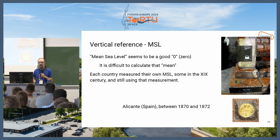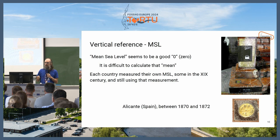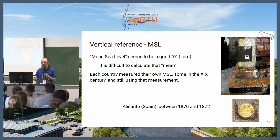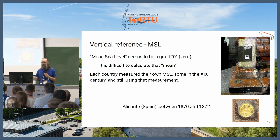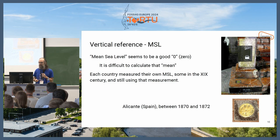It's also a good idea because there are not many places below sea level, so most heights we use will be positive. Computing this mean is not always obvious — you need a long time. For example, the zero reference in Spain is in Alicante on the Mediterranean Sea, and they were measuring between 1870 and 1872 to define the zero. Each country did something similar, so each country has their own reference point near the sea as the origin for vertical measurements.